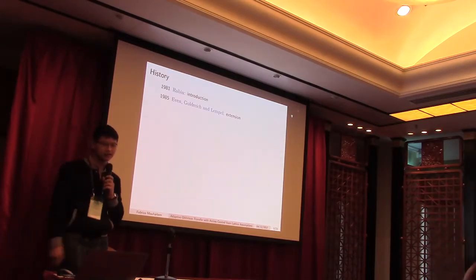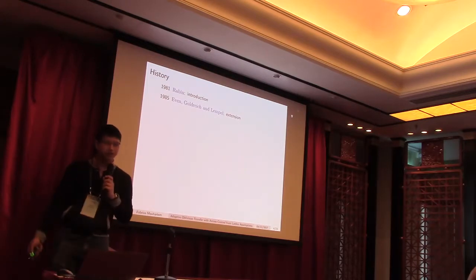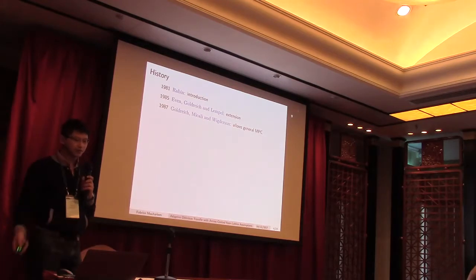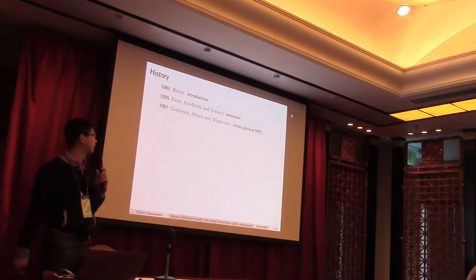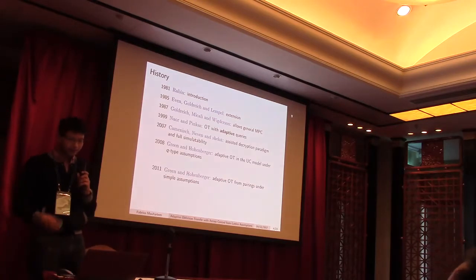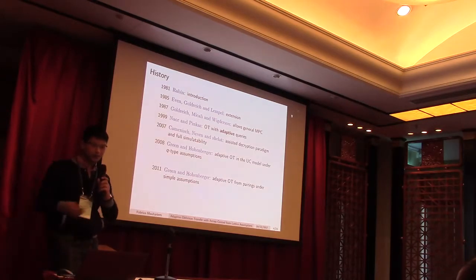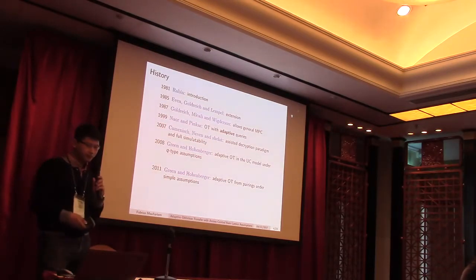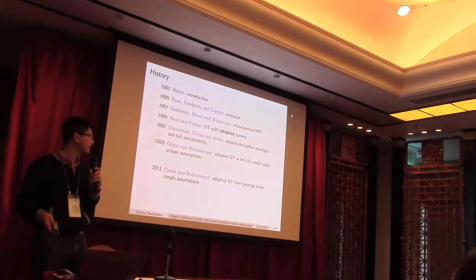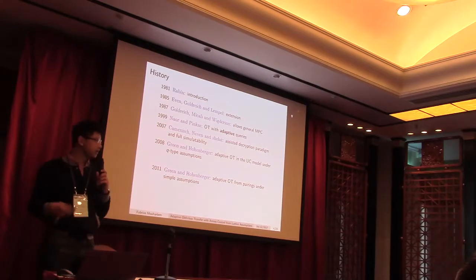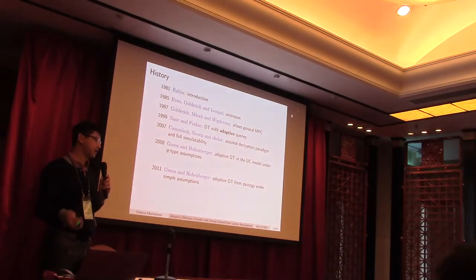So this story started in 1981 by introduction of the concept by Rabin. And then some works have been done on it. For instance, extension by Even, Goldreich and Lempel. And also, to prove that it's a complete building block for cryptography. And further, on adaptive oblivious transfer, many works have been done. For instance, it has been introduced in 1999.